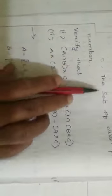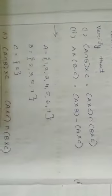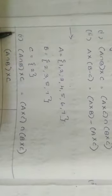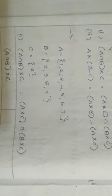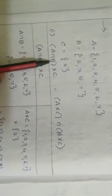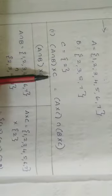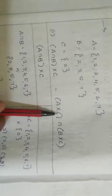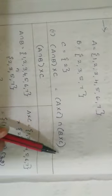The only even prime number is 2, so C = {2}. In this 7th sum we have two sub-problems. Now we are going to solve the first one — Roman numeral (i): A∩B × C = (A×C) ∩ (B×C).